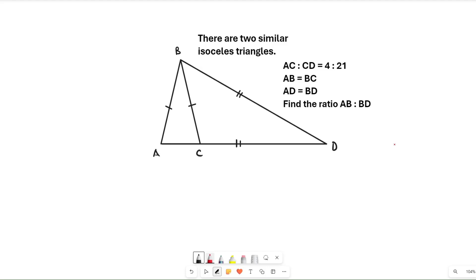Let's get started by writing down what we know. We know that AC and CD are in the ratio of 4 to 21. So I'm going to say that this length here is going to be 4x because we know it's a multiple of 4 but we don't know how big.